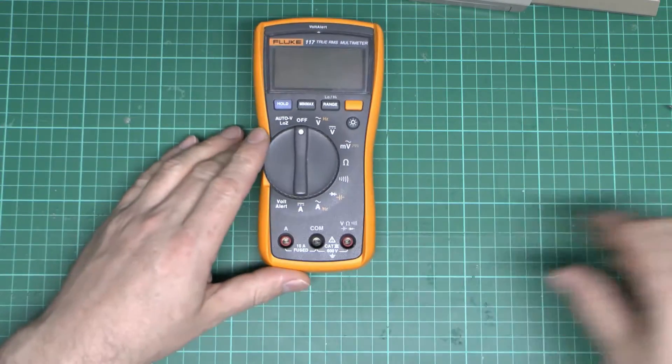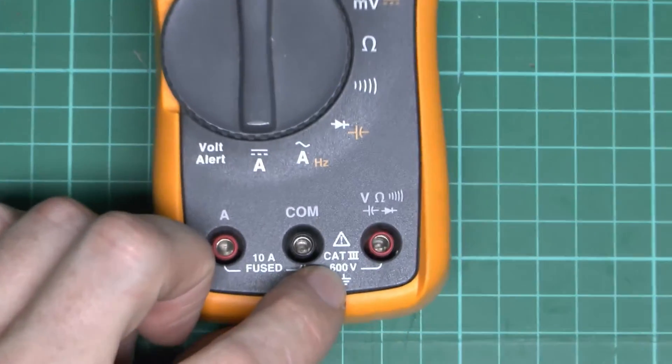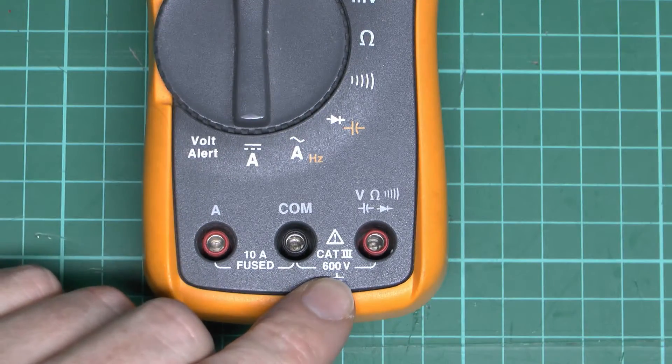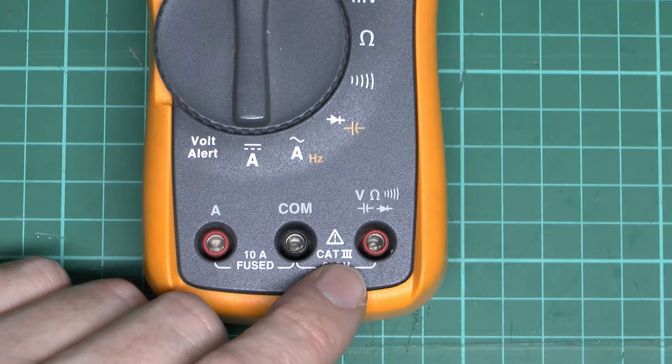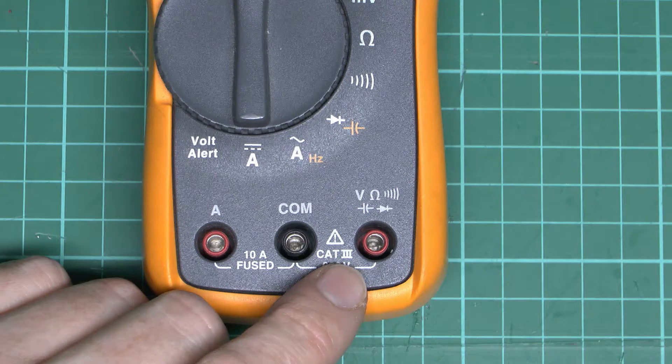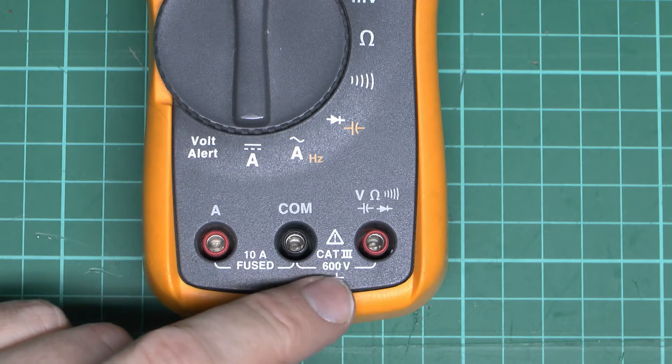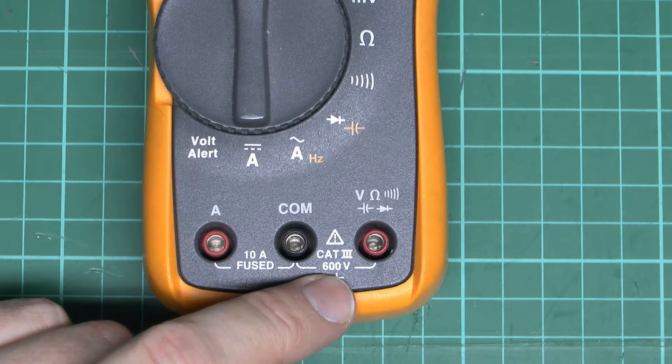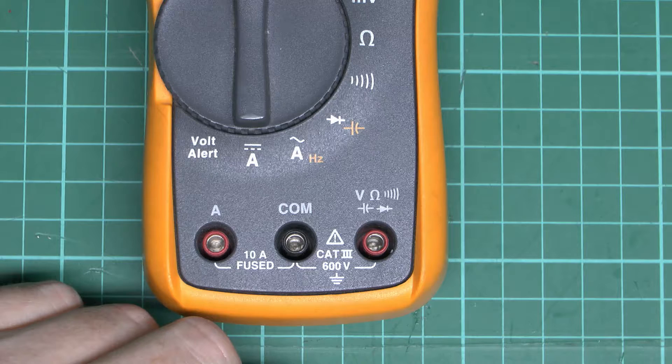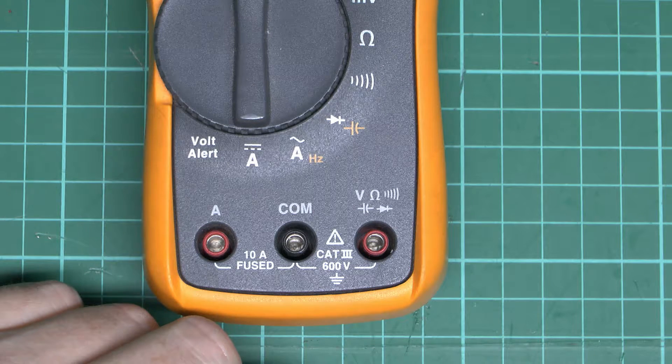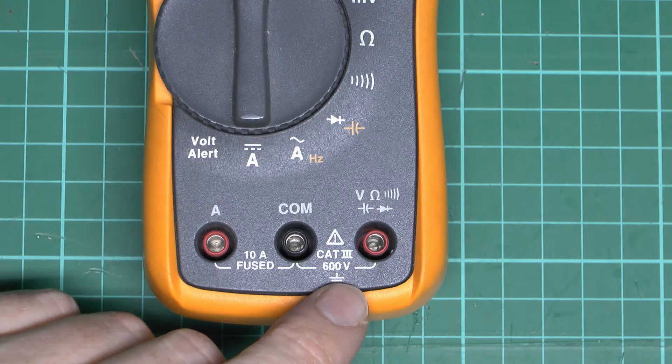Now this particular one here, which happens to be the one with a rating on that I've got, is a category 3 rating, and again it's 600V there. The category refers to the distance that you are from the source of the supply. So the closer you are to the source, the higher the category number you would need. So the highest number is actually a category 4, and that would represent the situation of an entrance to the building where the main power comes in, all the way down to category 1, which is really not intended for connection to the mains at all.